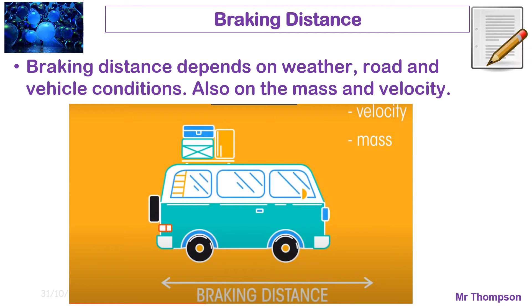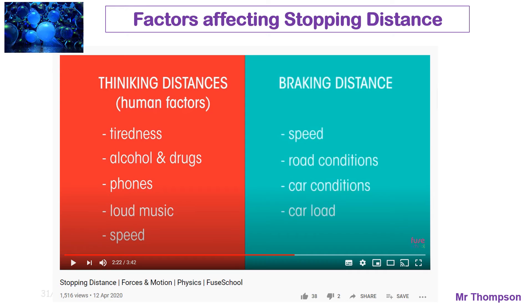Factors affecting stopping distance fall into two categories. The thinking distance involves human factors — things like tiredness, being under the influence of alcohol, drugs, or distractions like phones or loud music — all of which affect your reaction time. Speed doesn't affect your reaction time but increases the thinking distance because you travel further while thinking about braking. The braking distance depends on factors that slow the car down: speed, road conditions, car conditions, and the load of the car.